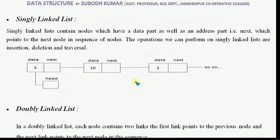Singly linked list contains nodes which have a data part as well as an address part, that is 'next', which points to the next node in the sequence of nodes. The operations we can perform on singly linked list are insertion, deletion, and traversal.